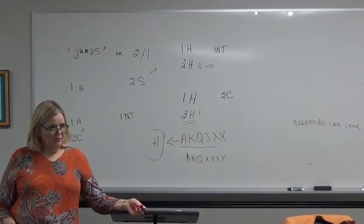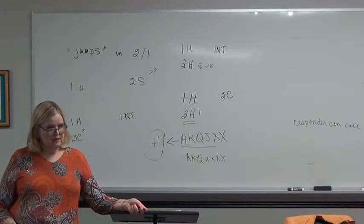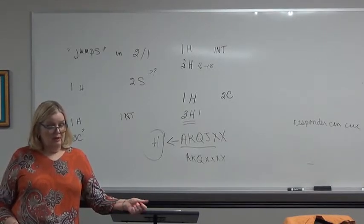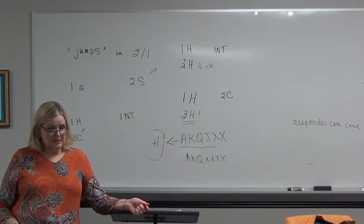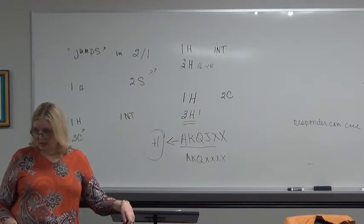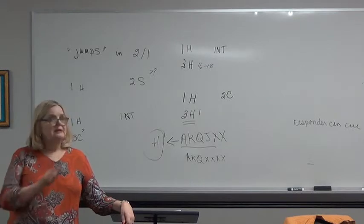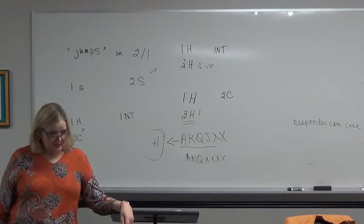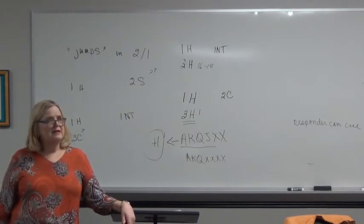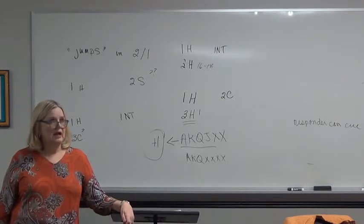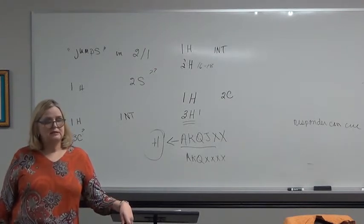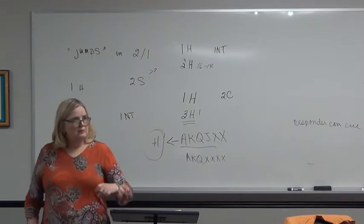If however partner doesn't cuebid the ace of spades and they bid four diamonds, what are they telling me? No ace of spades. And no ace of clubs. No ace of diamonds. That's right. They're telling me the ace they have and the two aces they don't have.